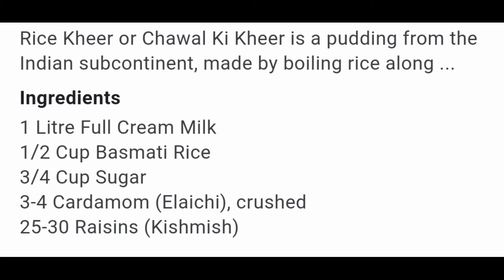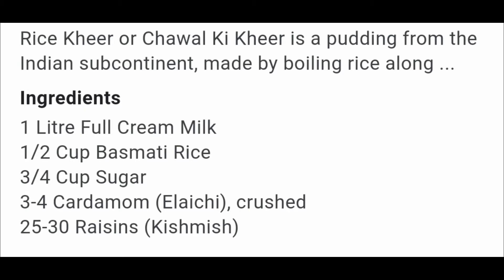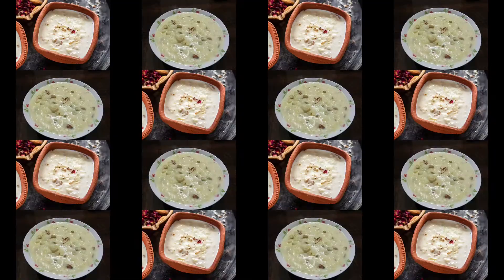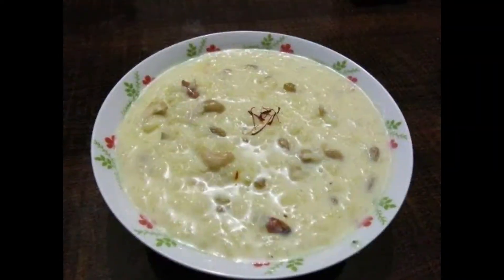We have to add rice in boiling milk. Simmer and cook rice on a low flame. No need to cover the pan when the rice is cooking. Cook the rice grains till they are half cooked, then add sugar as required, and add other ingredients also. Mix them well — kheer is ready.